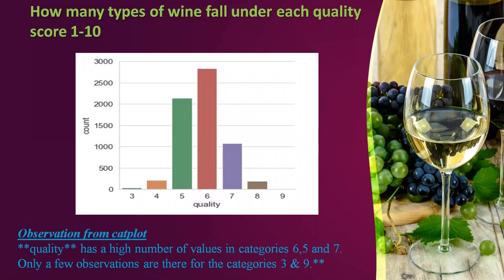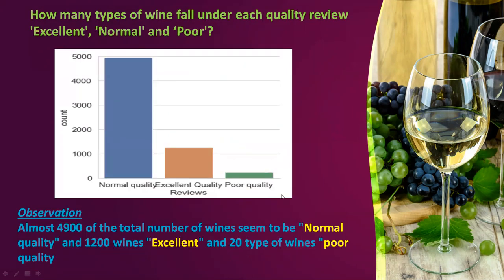How many types of wine fall under each quality score 1 to 10? From the cat plot, we observe that the quality scores with the highest number of values are categories 5, 6, and 7. Other categories — 3, 4, 8, and 9 — have very few observations in our dataset present in these quality scores.